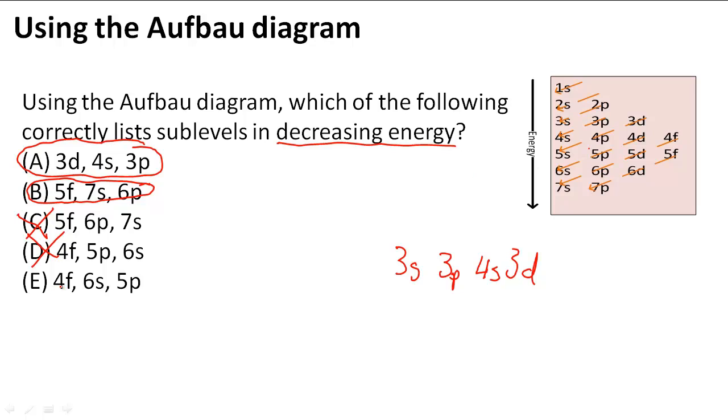So let's try again. 4f, then 6s, then 6s, yes, and then 5p. So E is also one of our answers. So A, B, and E are the answers using the Aufbau diagram that shows the sublevels in the decreasing energy positions.